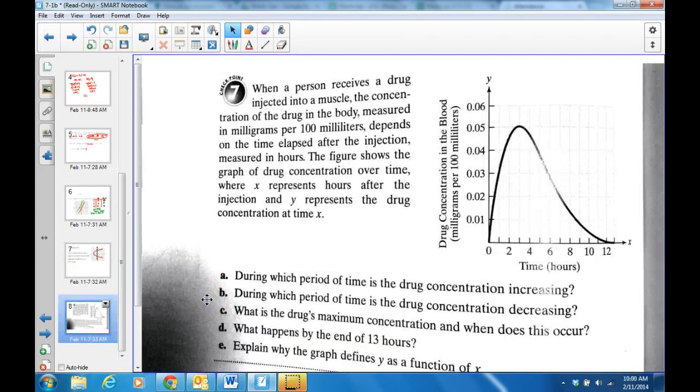We have, basically, a couple of story problems in the chapter where we're going to be interpreting graphs. And this one is about a drug injection. When a person receives a drug injection into a muscle, the concentration of the drug in the body measured in milligrams per 100 milliliters depends on the time elapsed after the injection.